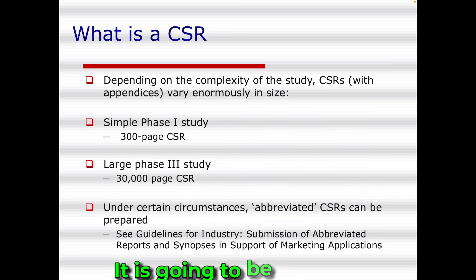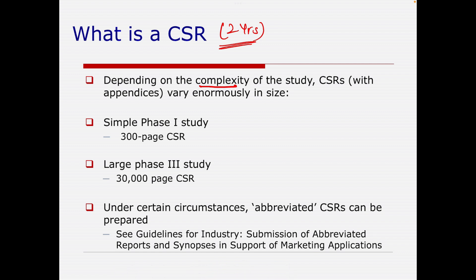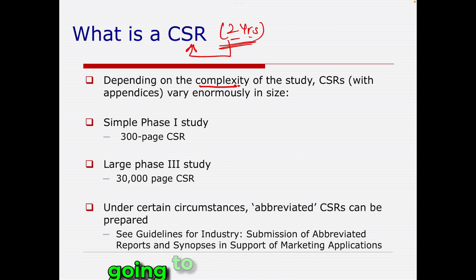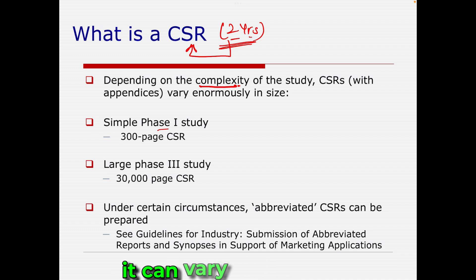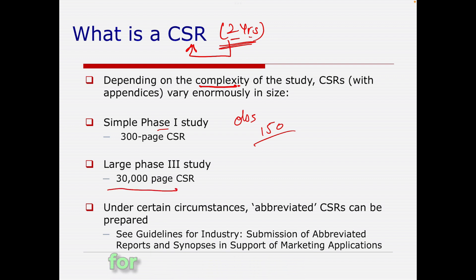The CSR is a very complex document — not straightforward at all. Whatever was done in the trial from day one must be presented in the CSR. If your trial ran for two years, all activities from those two years must be included. A phase one CSR can range from about 200–300 pages, and even an observational study can be 100–150 pages, but larger trials can exceed 30,000 pages.